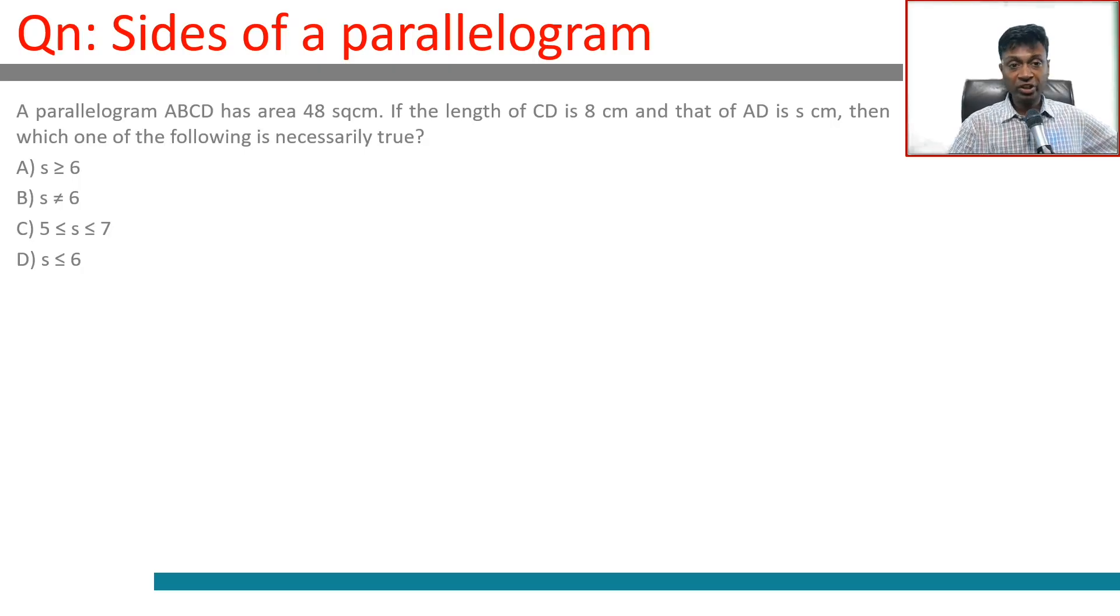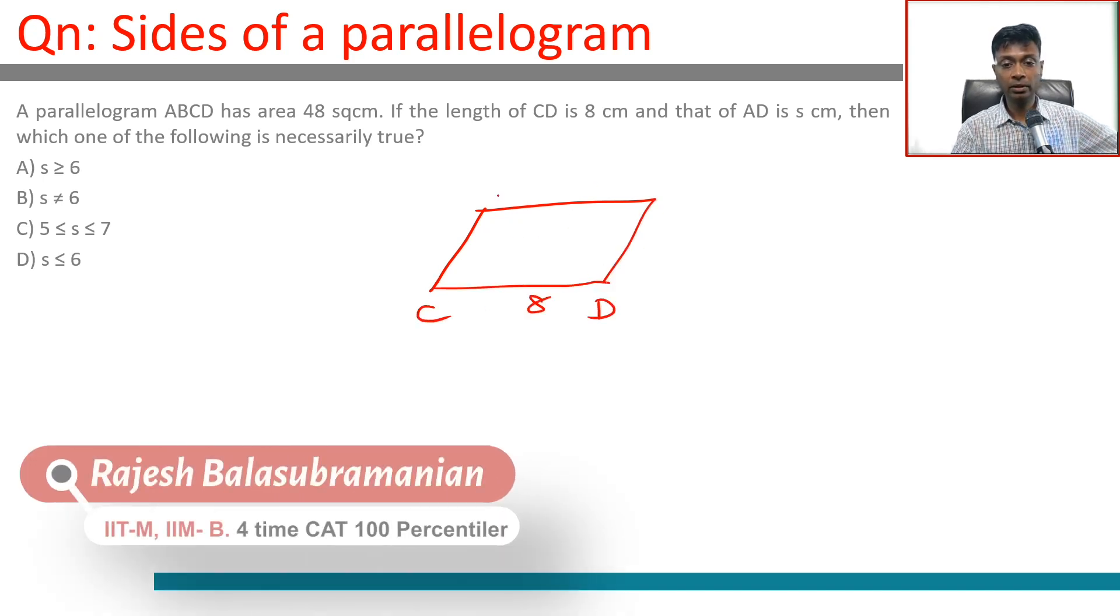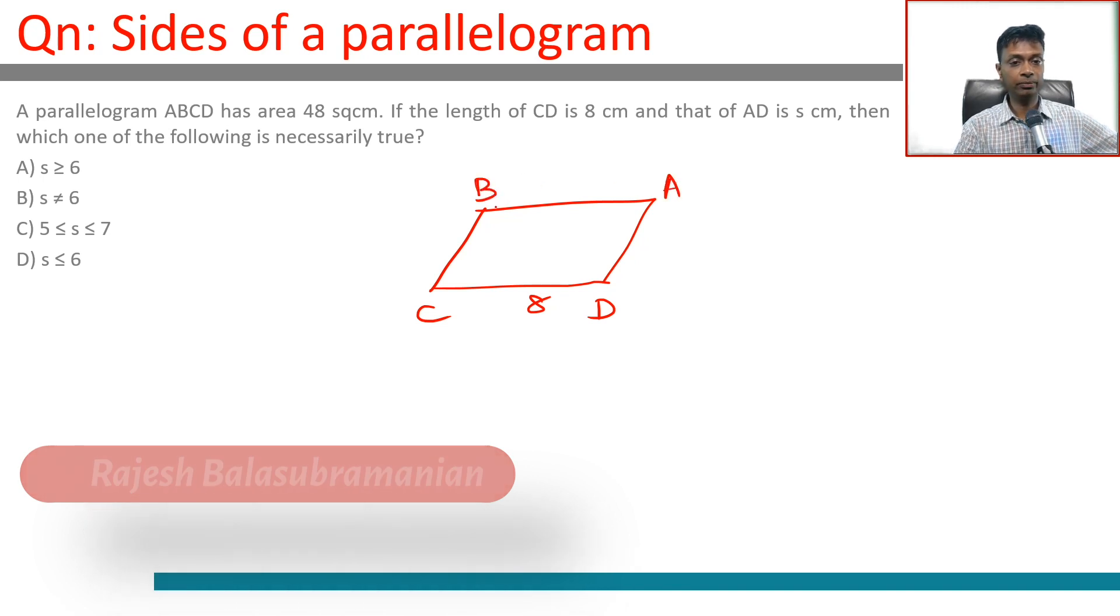A parallelogram ABCD has area 48 square centimeters. CD measures 8 cm and AD measures s. The height is 6 centimeters.